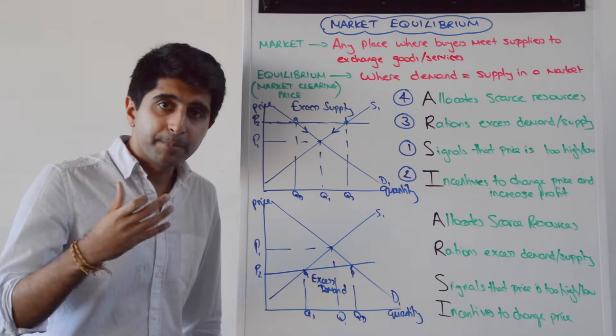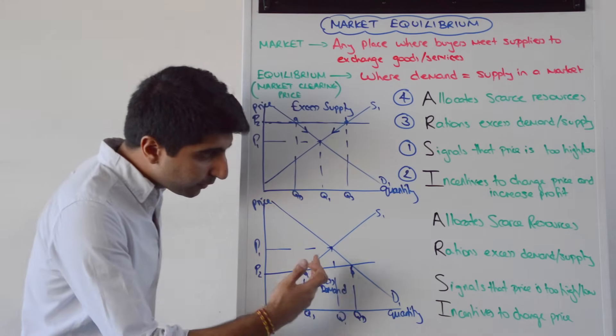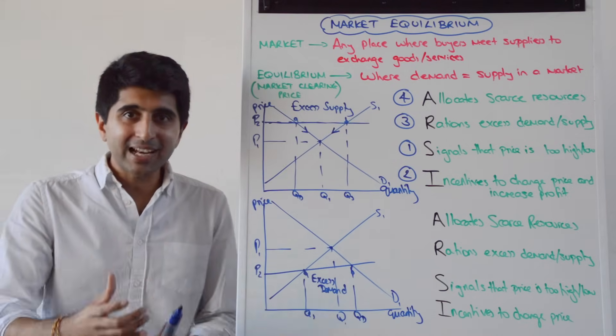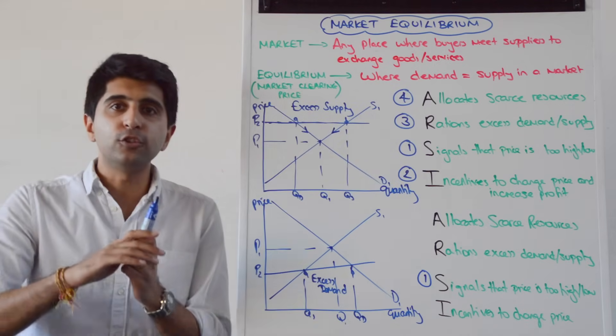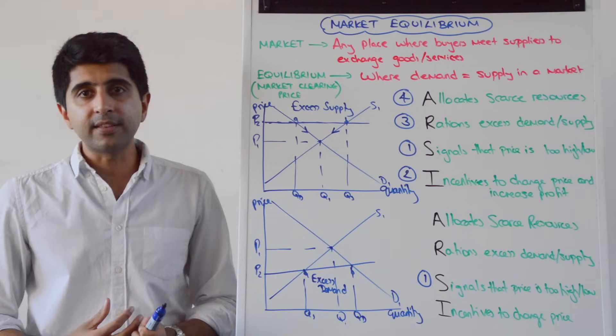What about at the prices below equilibrium here? We can see there is an excess demand. Well, exactly the same order. First, a signal will be sent to producers that now the price is too low. How will producers see this?